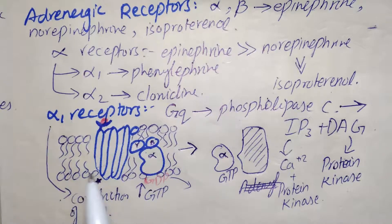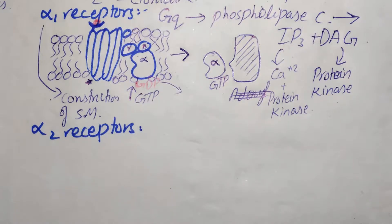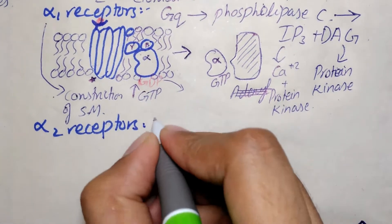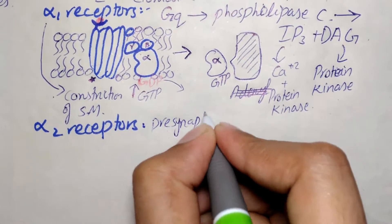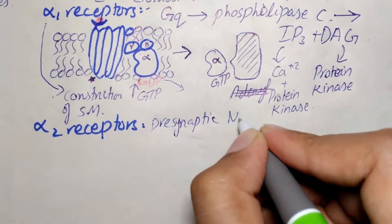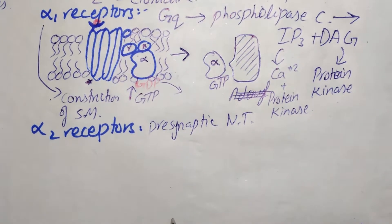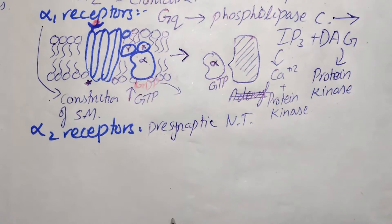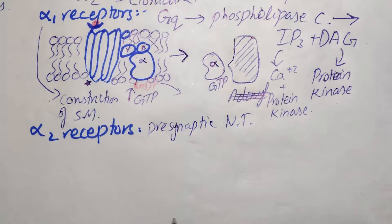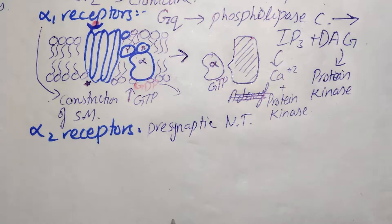Alpha 2 type adrenergic receptors are primarily located on sympathetic presynaptic nerve terminals and control the release of norepinephrine. When there is sympathetic adrenergic nerve stimulation, a portion of the released norepinephrine circles back and reacts with alpha 2 receptors on the presynaptic membrane.